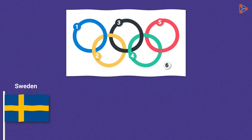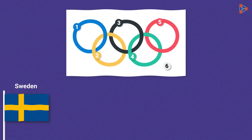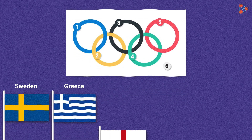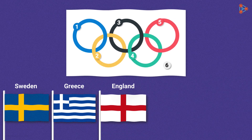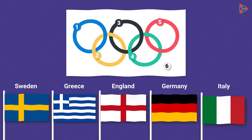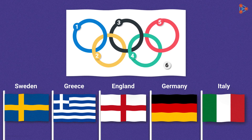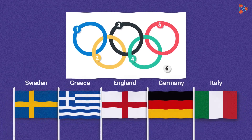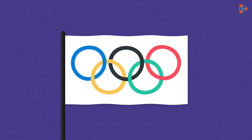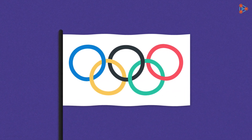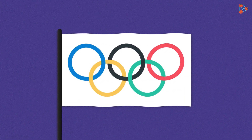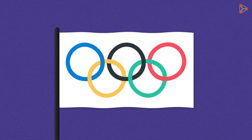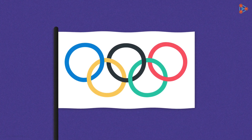Blue and yellow of Sweden, blue and white of Greece, red and white of England, and the tricolour flags of Germany and Italy, along with the flags of other countries as well. Taking into account all these colours, the Olympic flag was designed this way. Now you know what the Olympic flag represents and the idea behind it.